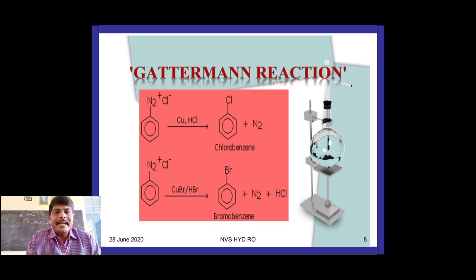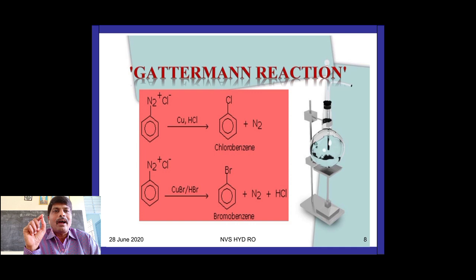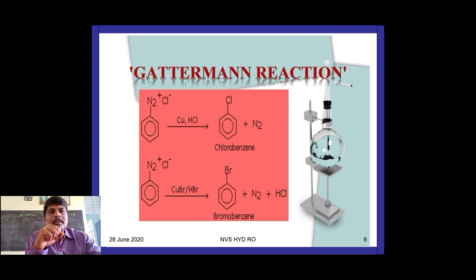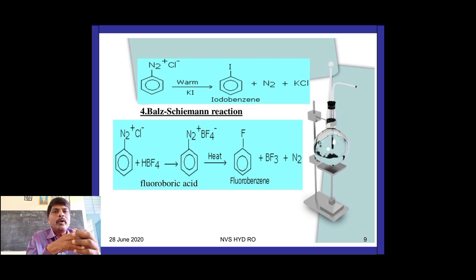The Gattermann reaction is similar to the Sandmeyer reaction with a small variation — only the reagents change. When benzene diazonium chloride reacts with copper and HCl, chlorobenzene is the product; with copper and HBr, bromobenzene is the product. If you use CuCl and HCl that is the Sandmeyer reaction; if you use Cu + HCl it is the Gattermann reaction. To get iodobenzene, benzene diazonium chloride is warmed with KI.